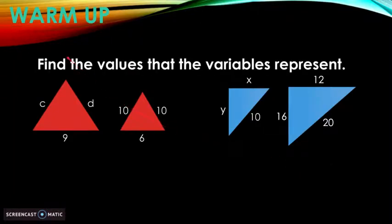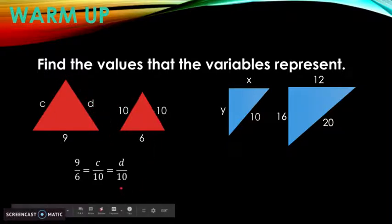For our warm-up, find the values that variables represent. By using 9 is equal to 6, by proportionality, we have 9 is to 6, C is to 10, and D is to 10. How do we find C and D? By common ratio.